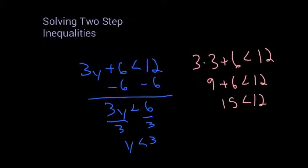I look at my work. I subtracted 6 — 12 minus 6 is 6, that's good. Then I divided by 3. I said 6 divided by 3 is 3, but that's not true. 6 divided by 3 is 2. So I go back to my check and change that 3 to a 2.